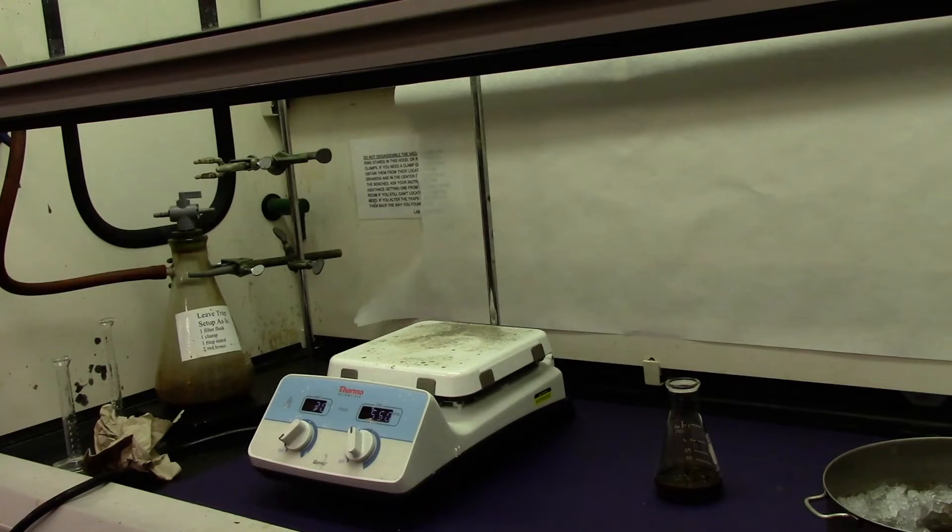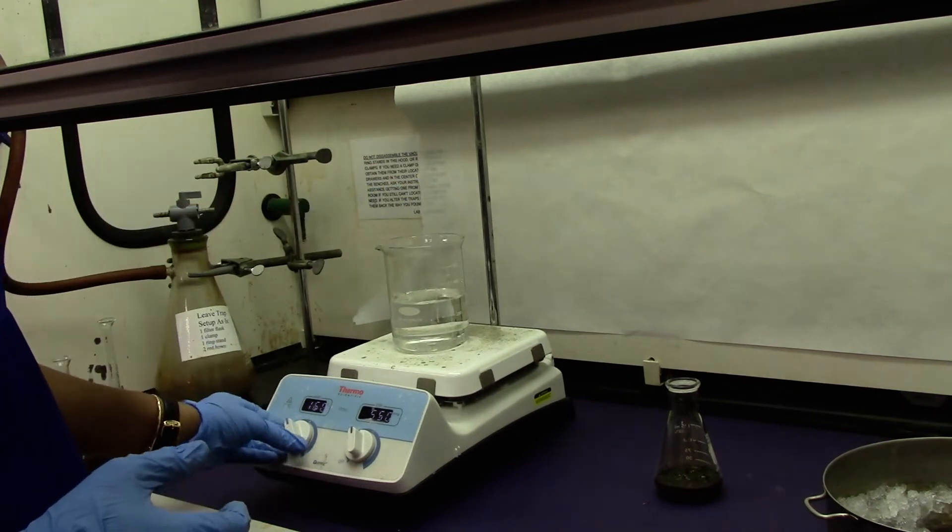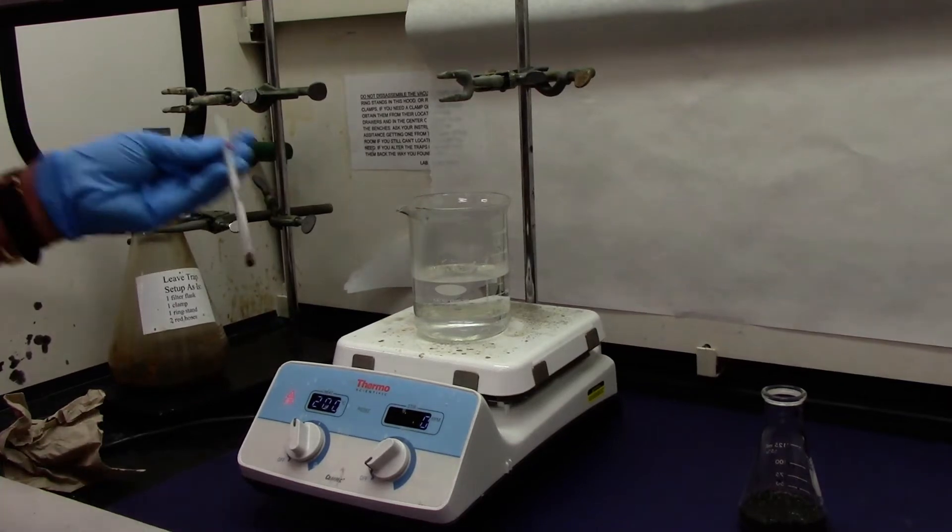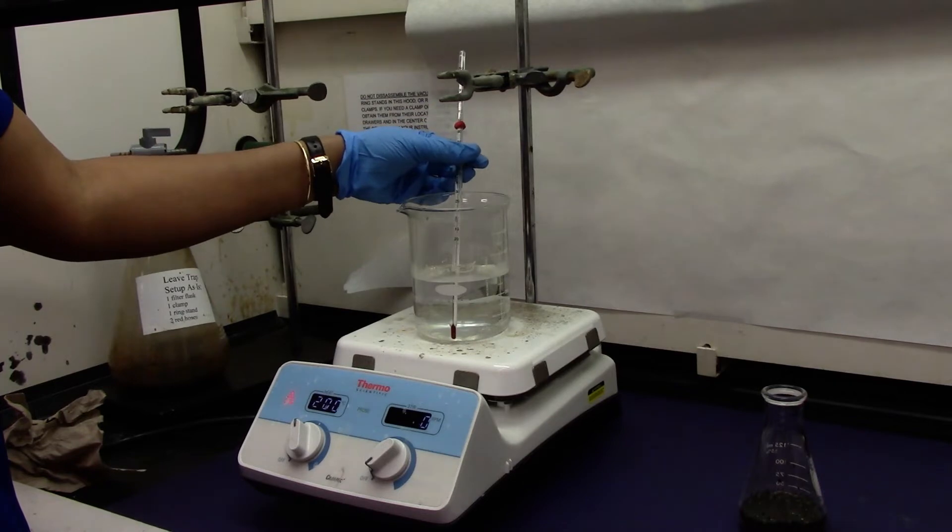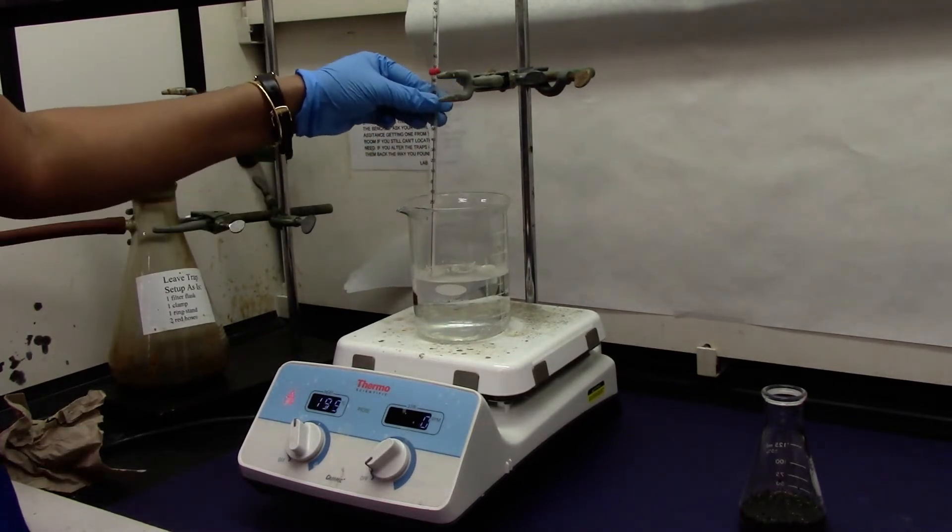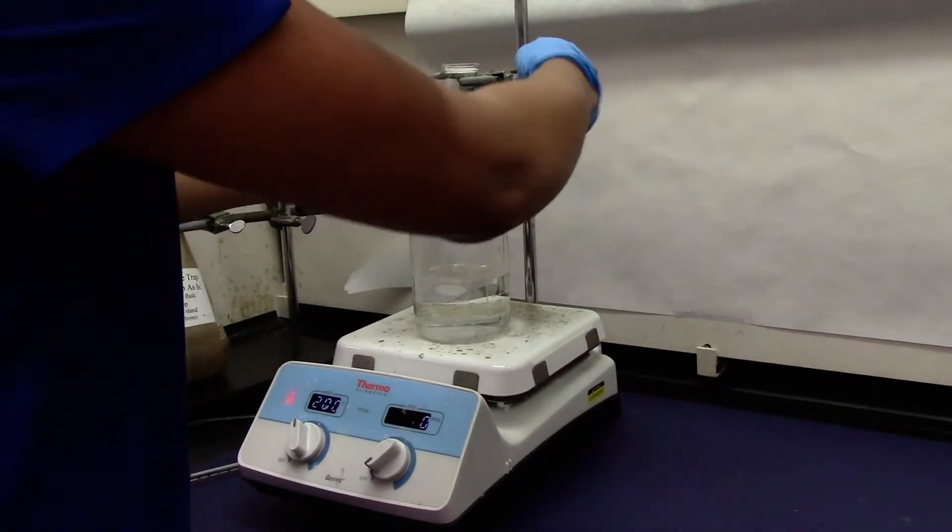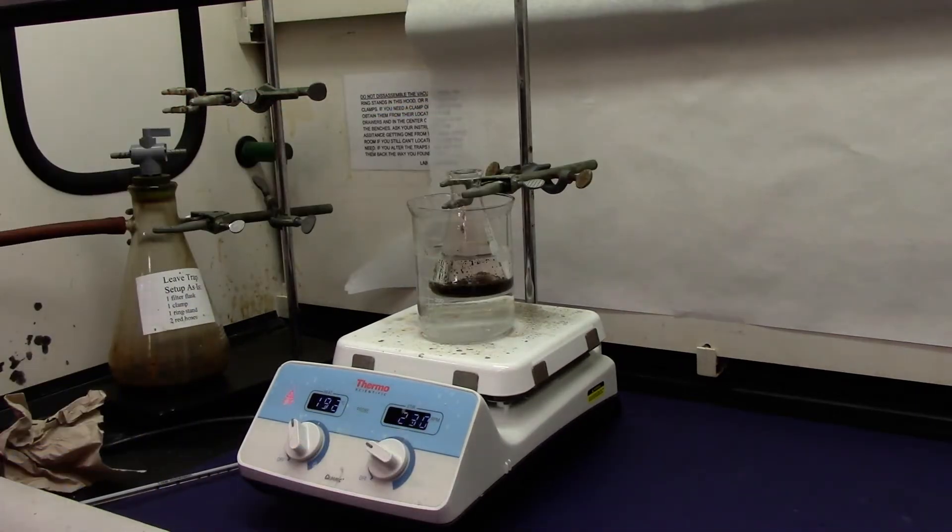While the mixture is standing I'm going to go ahead and place a water bath to warm up. And add a clamp. While the water bath warms up you can check the temperature. We need around 40 degrees Celsius. So the temperature of the water bath is around 40 degrees. I'm going to go ahead and clamp my solution mixture. Slowly lower it down. So at 40 degrees Celsius we will let the mixture stir for about 10 minutes.